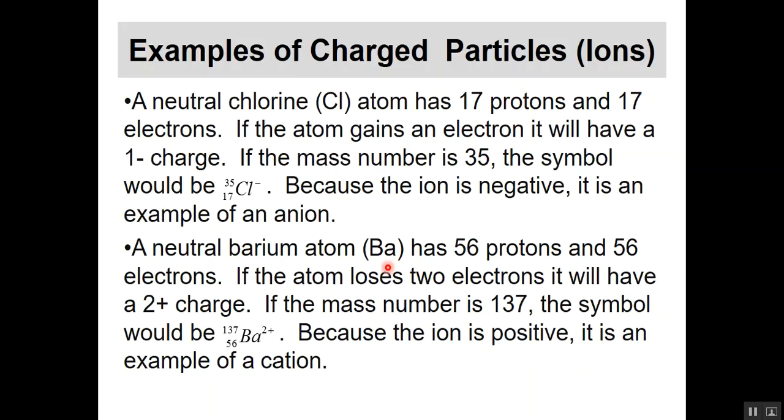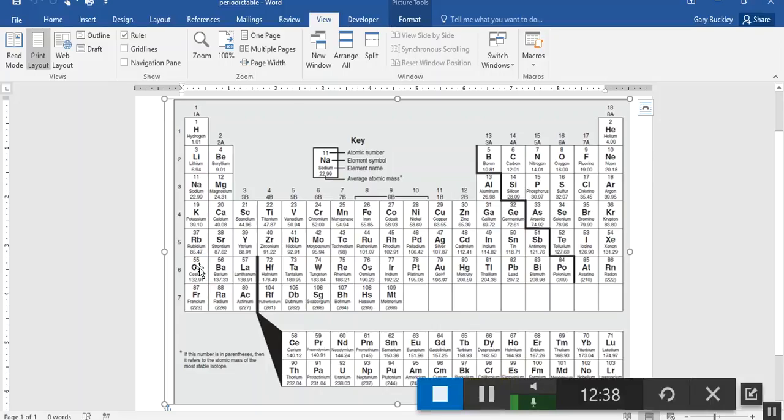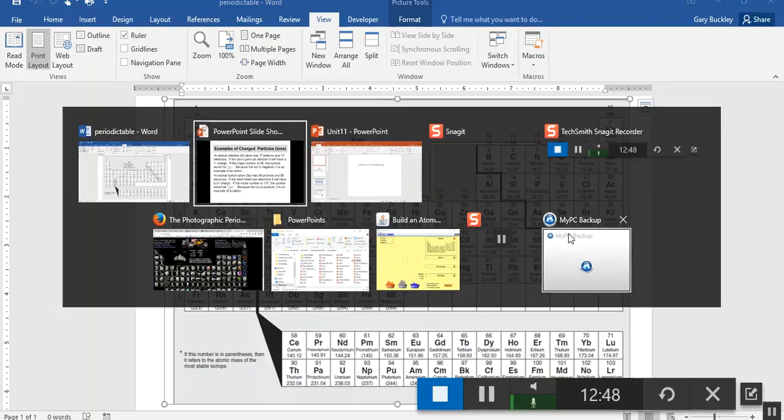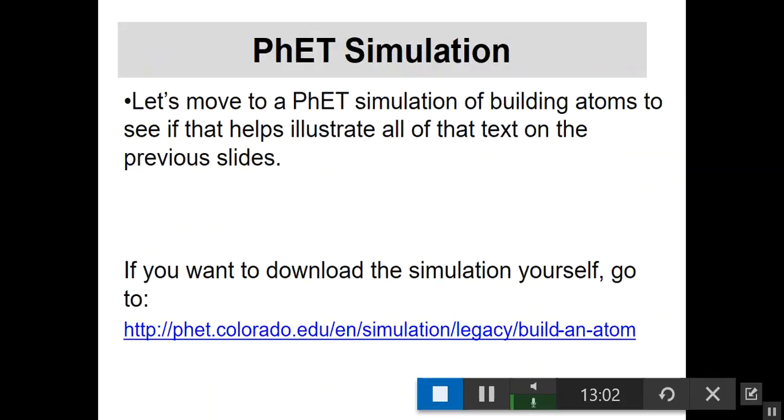A barium atom is number 56 with 56 protons and 56 electrons. If it loses two electrons, the charge would be 2 plus with mass number 137. Because the ion is positive, it's an example of a cation. Chlorine is upper right number 17, picking up one electron gives it the same number as argon. Barium losing two electrons gives the same number as xenon. That's important later.